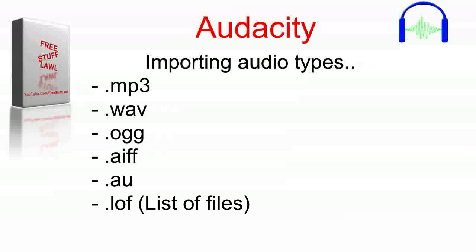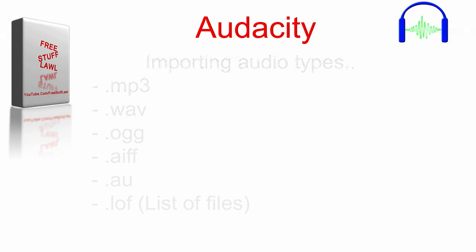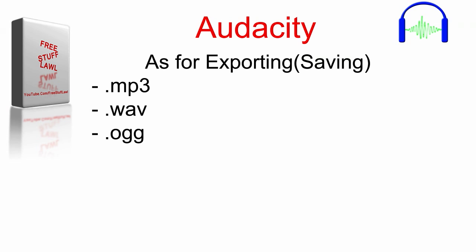If you don't want to edit audio you record in Audacity, you can simply go and import audio files. Audacity can import six file types: WAV, AIFF, AU, MP3, OGG, and LOF files. For exporting, the file types you can export as are MP3, WAV, and OGG.